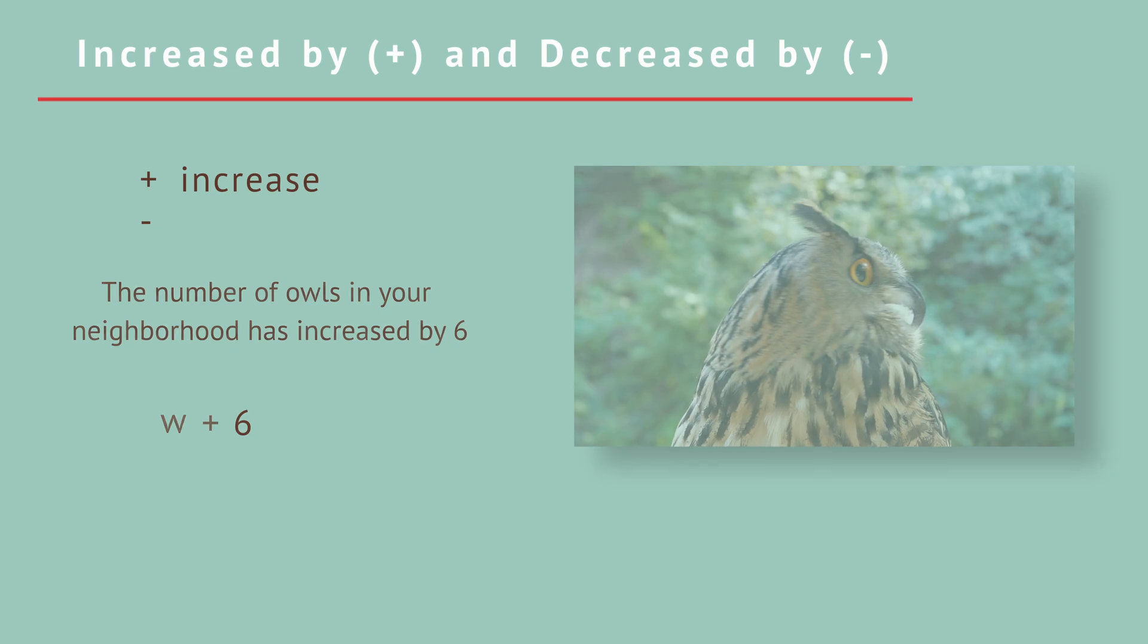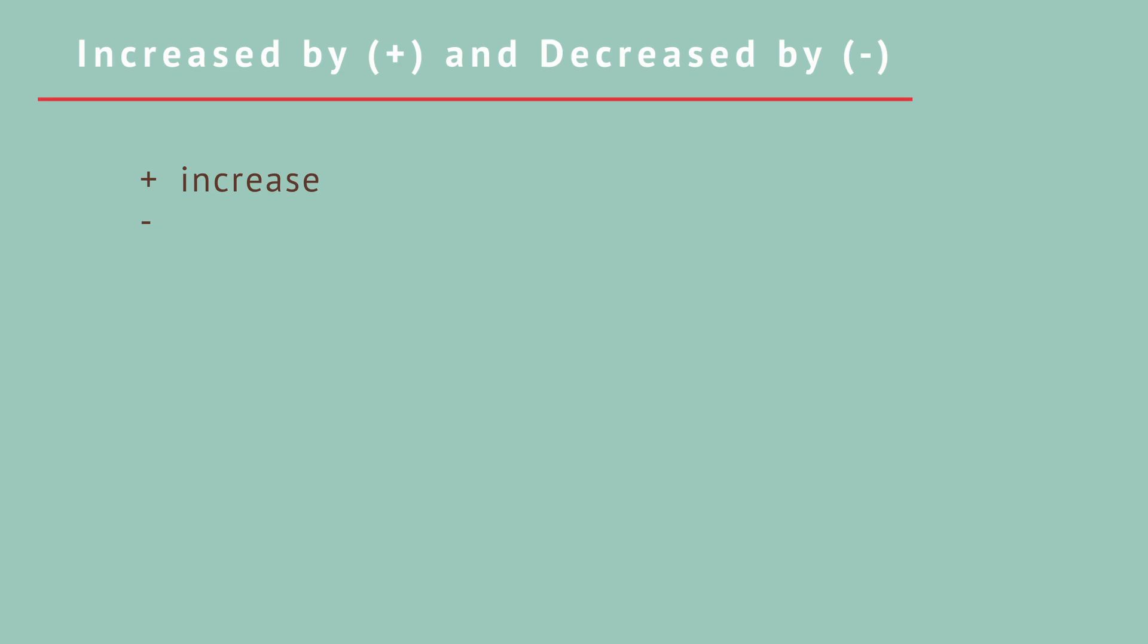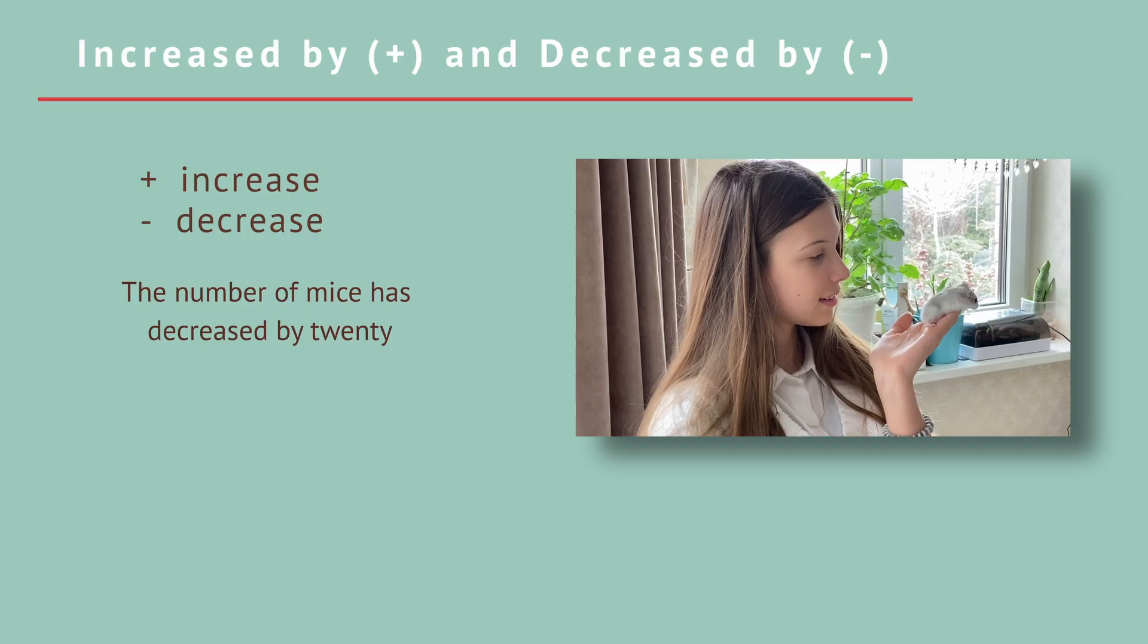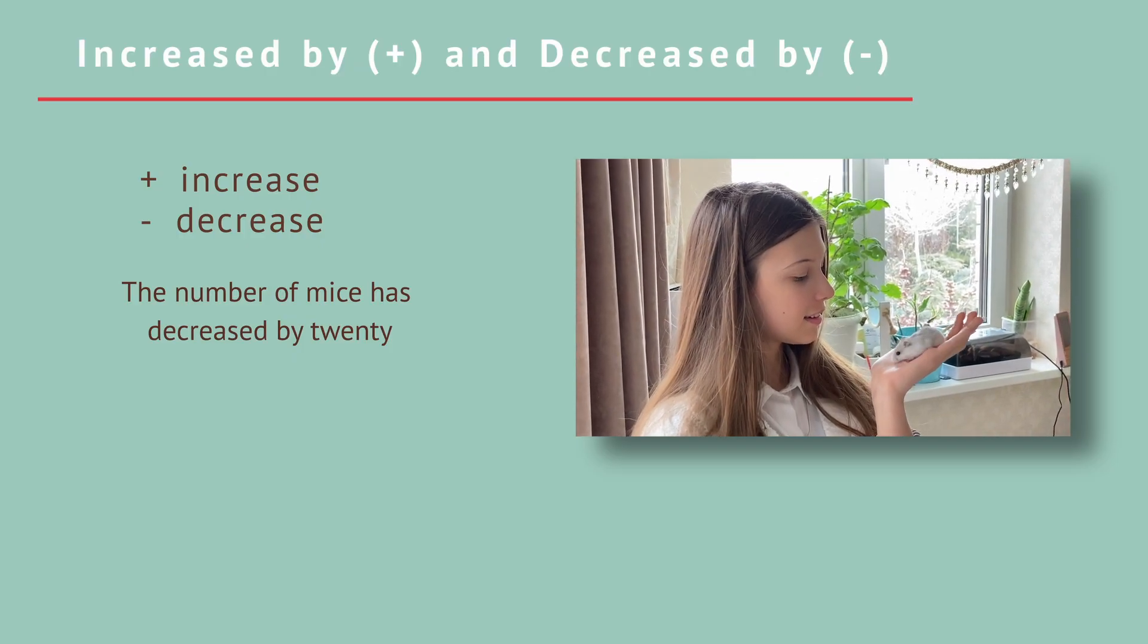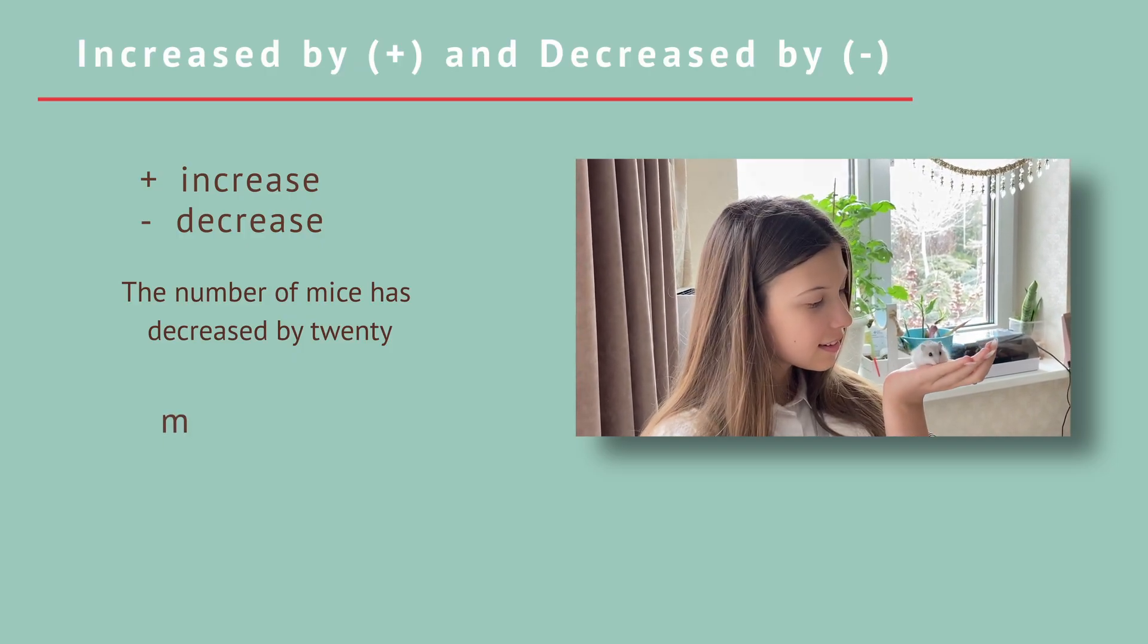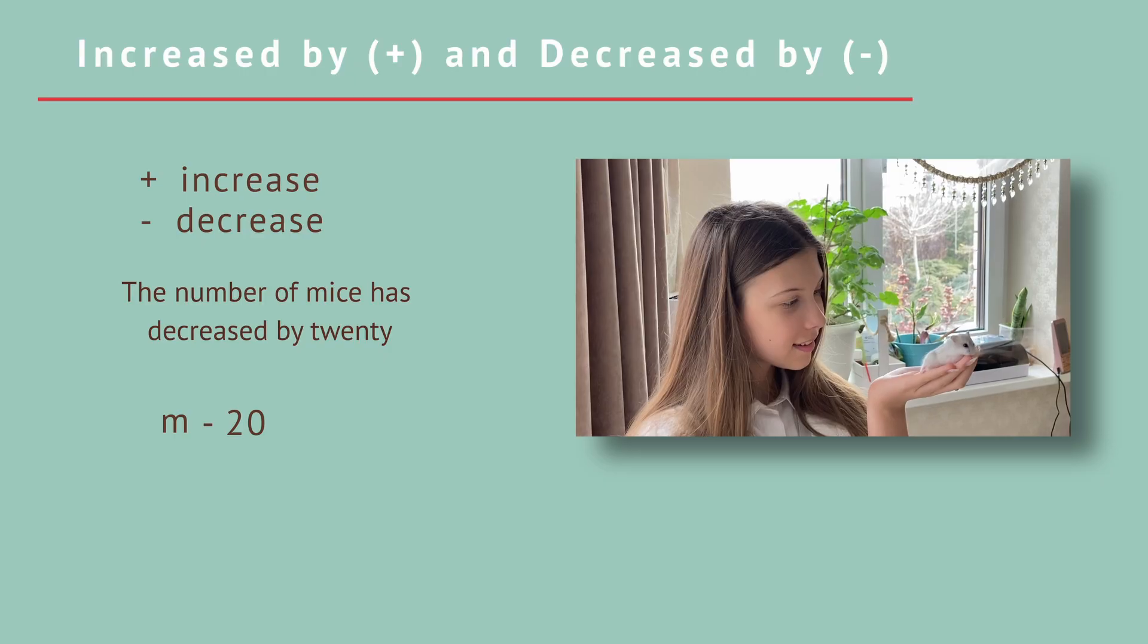Similarly, we can express the opposite idea with the minus sign to show that a value has decreased by a certain amount. This is subtraction. If the word problem says the number of mice has decreased by 20, we can write it like this. M for the number of mice. M minus 20.